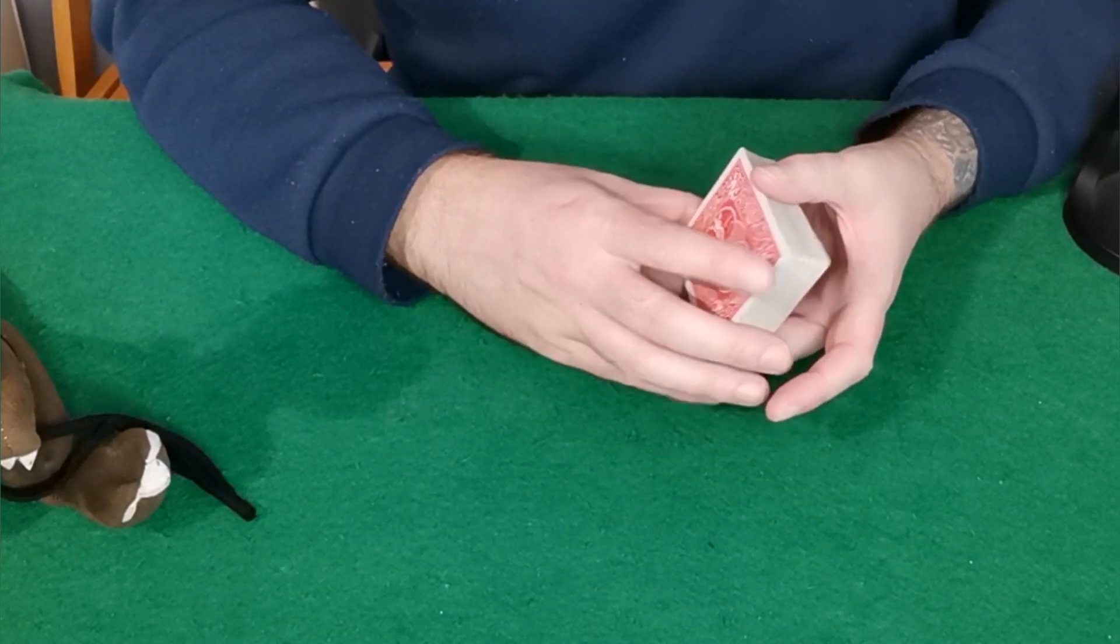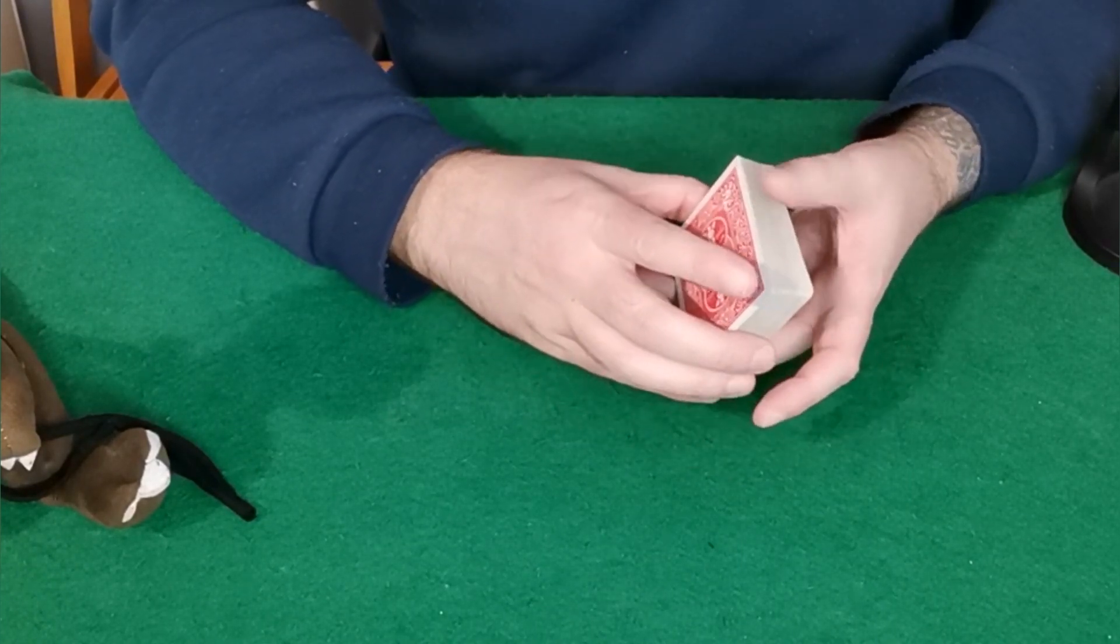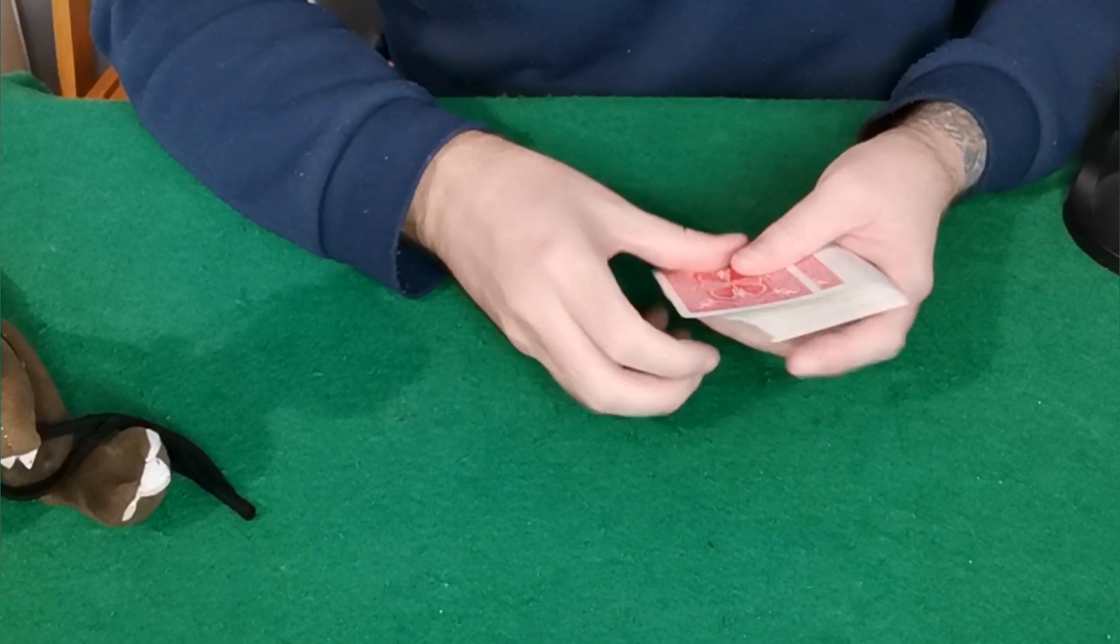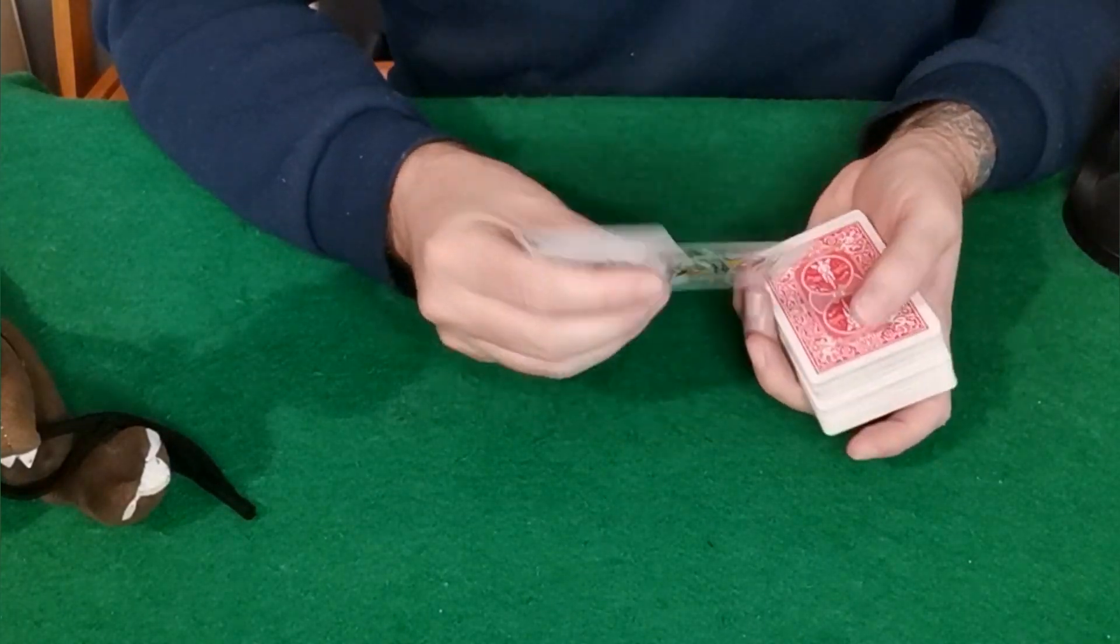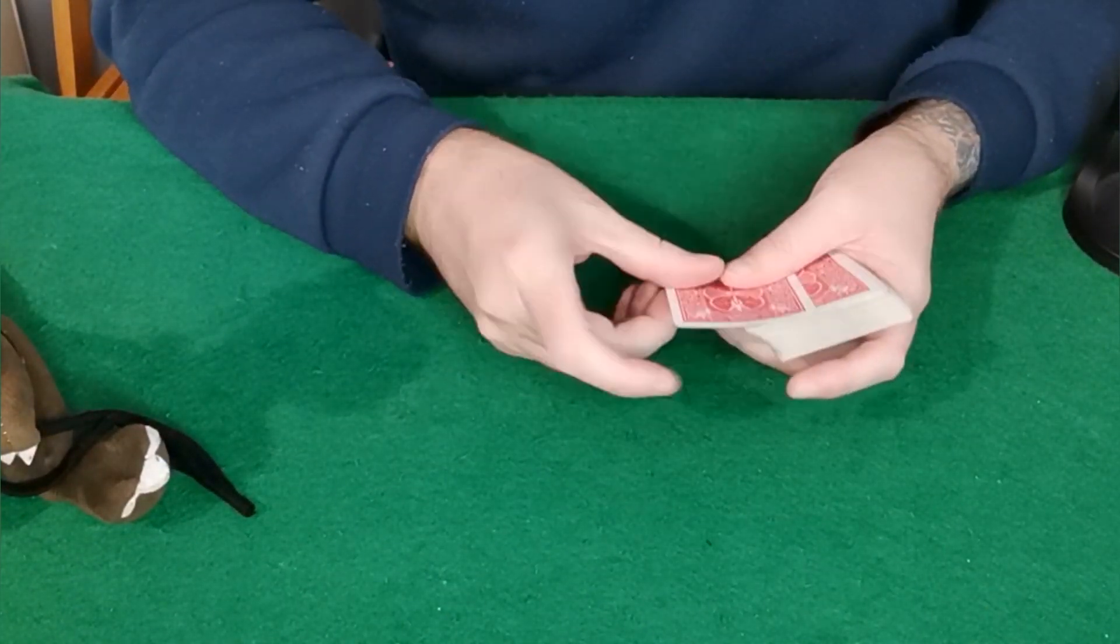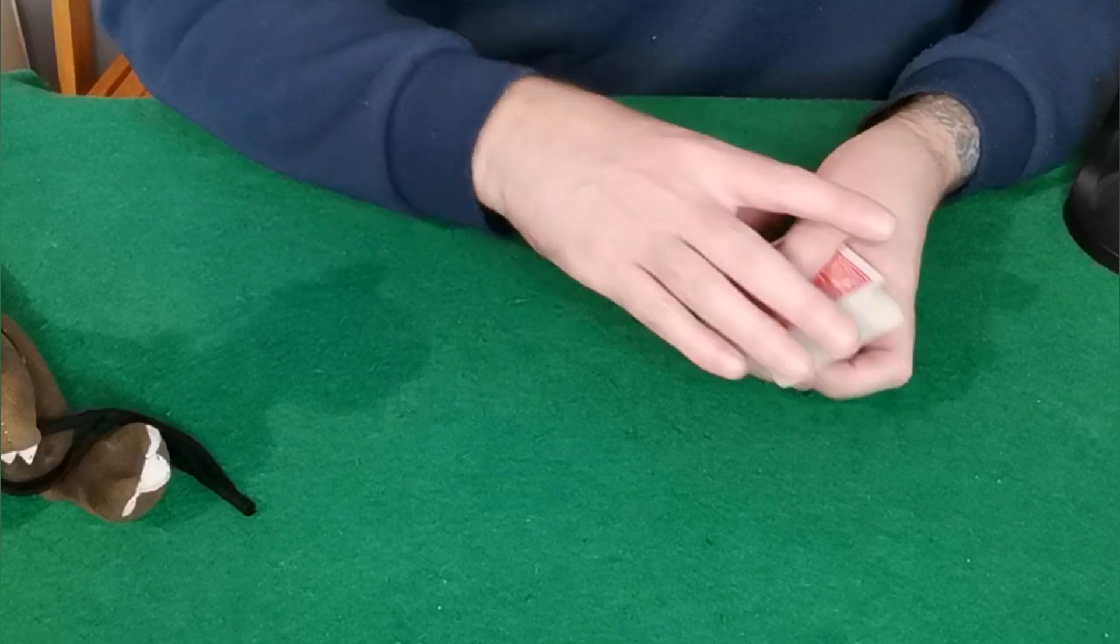So this is one of those skills that every single magician needs in their arsenal. It's how to do magician's choice. Now what magician's choice is, let's say you want to force someone to pick something. Let's say you want to force them to pick the ace of clubs.